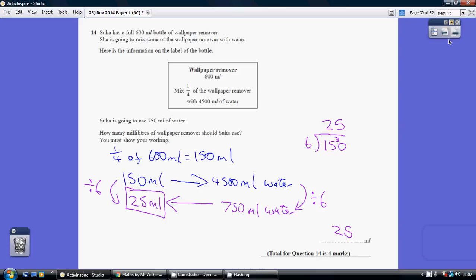Question 14. First of all, we need to work out what a quarter of 600 is. So that's 150.